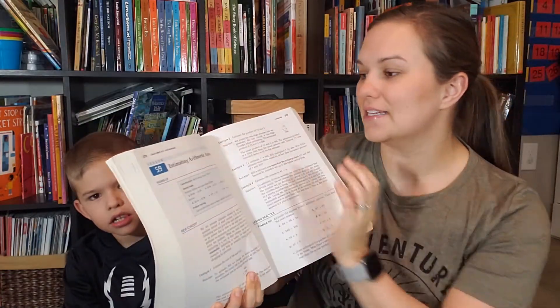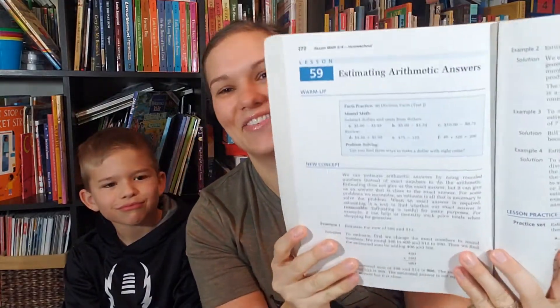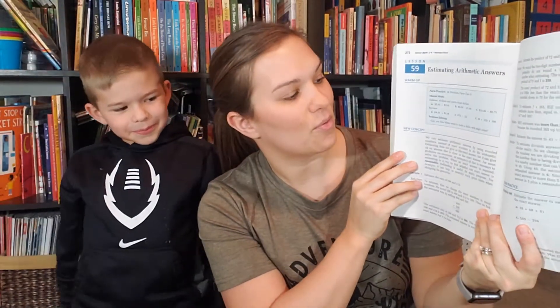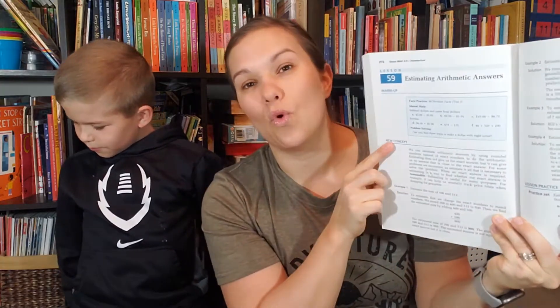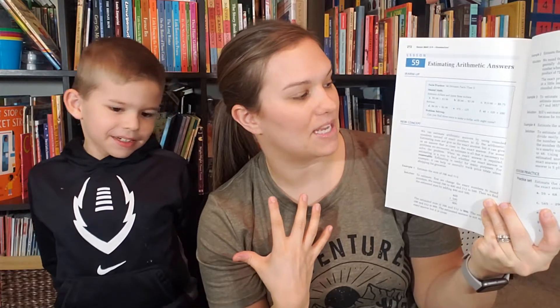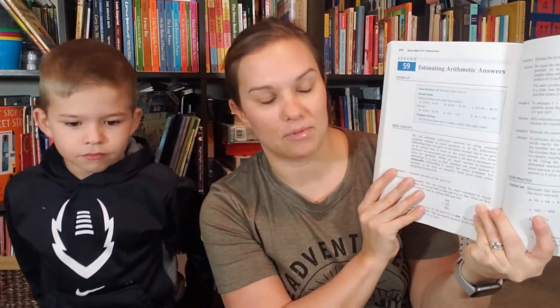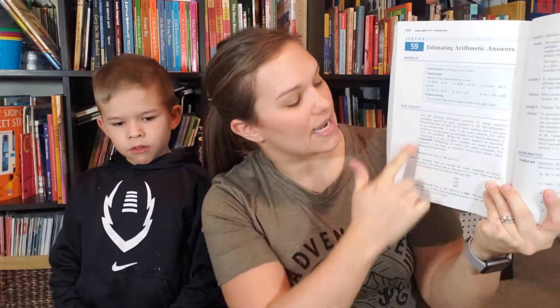So this is what it looks like. It tells you the lesson number at the top - we are in lesson 59. It tells you that we are estimating arithmetic answers for this lesson. We have a warm up that we do each day before we actually get to the new concept in the lesson where we're doing some facts practice, mental math, and problem solving problems.